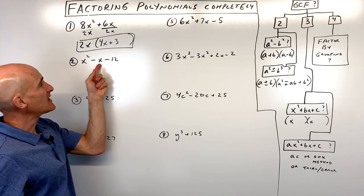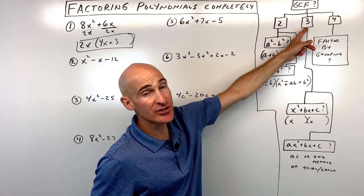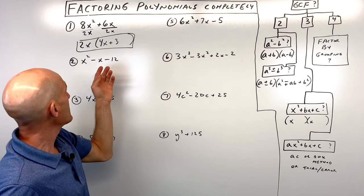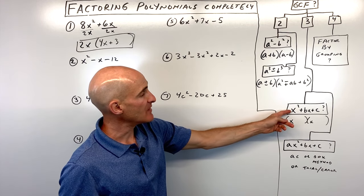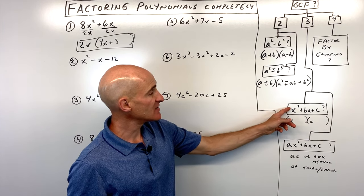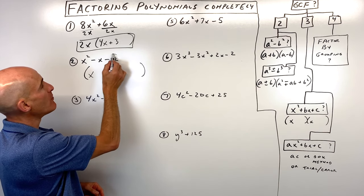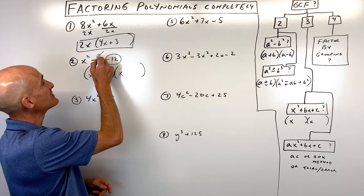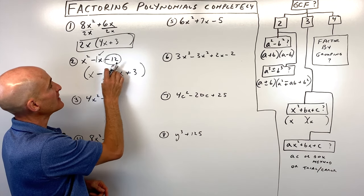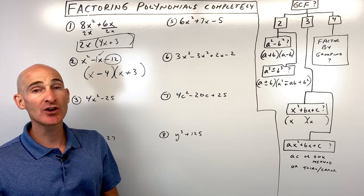Number two, we've got x squared minus x minus 12. If we go to our decision tree, we see that we have three terms, and there's not a greatest common factor — we always want to check for that first. It's a trinomial. Is the leading coefficient 1? In this case, yes. So we can jump right in: what two numbers multiply to negative 12 but add to the middle coefficient, negative 1? That's going to be negative 4 and positive 3. They multiply to negative 12, and negative 4 plus 3 adds to negative 1. We can't factor further, so that's it.